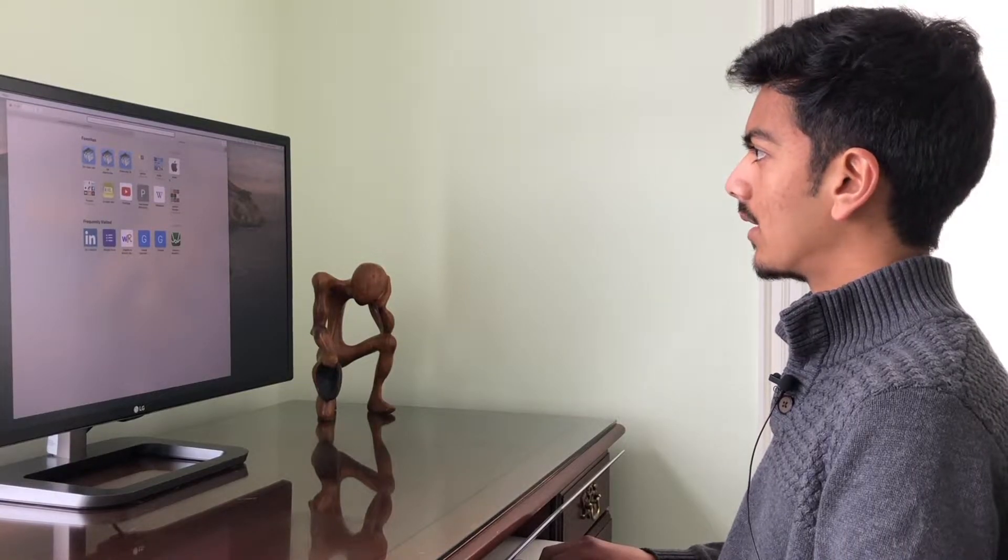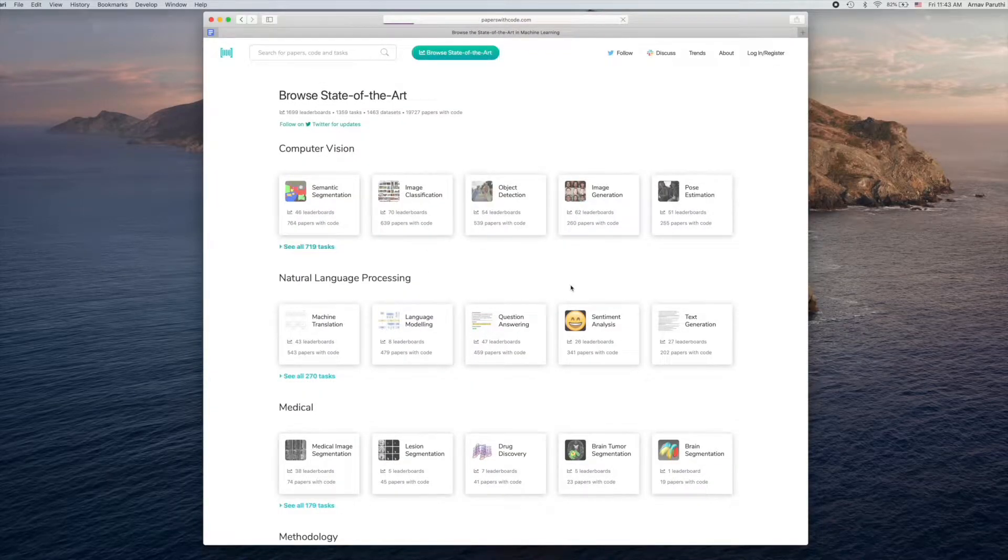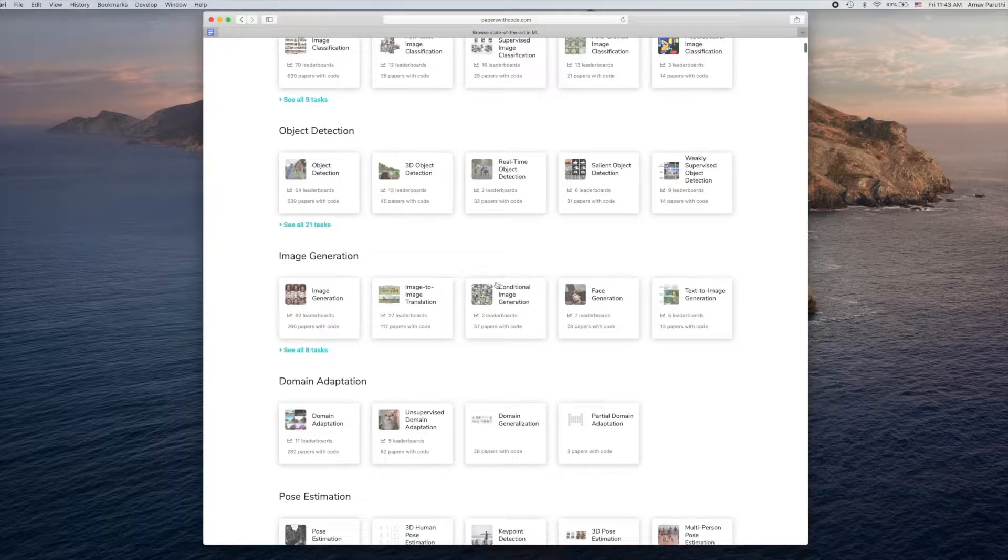What are the cool new AI algorithms out there? Image generation seems pretty cool. Text to image generation.